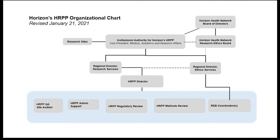The HRPP is the Human Research Protection Program — a program that governs the oversight of all research conducted within Horizon. There is a formalized structure to it. The institutional authority for the HRPP is Dr. Susan Breen. Under Dr. Susan Breen is the Regional Director of Research Services, the Regional Director of Ethics Services, and then myself overseeing the ORS, or Officer Research Services, side of the HRPP. We have Stella's role as QA auditor within the HRPP and administrative support.